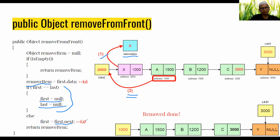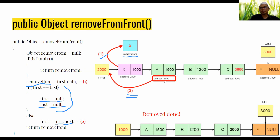Otherwise, if there are more nodes, we go to the else block. The second step is to get first.next, which gives us the address of the second node. Since we want to remove the first node, the second node must become the new first node.